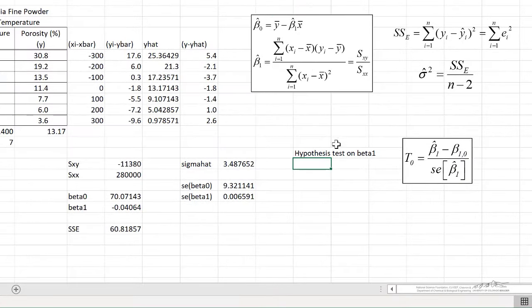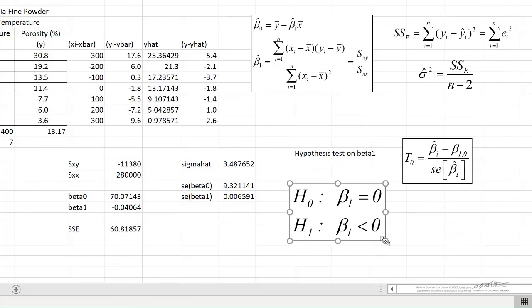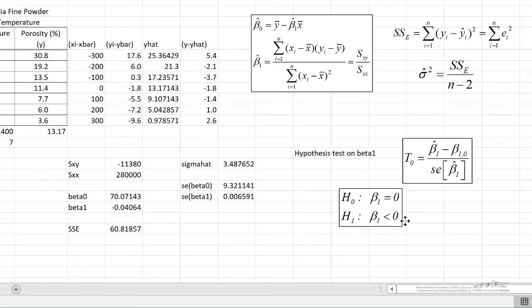Let's continue our example from a previous screencast. Now our beta_1 is negative. Our alternate hypothesis is going to be that the slope is less than zero. So we're doing a lower tailed test. We can use this equation over here to calculate our test statistic.